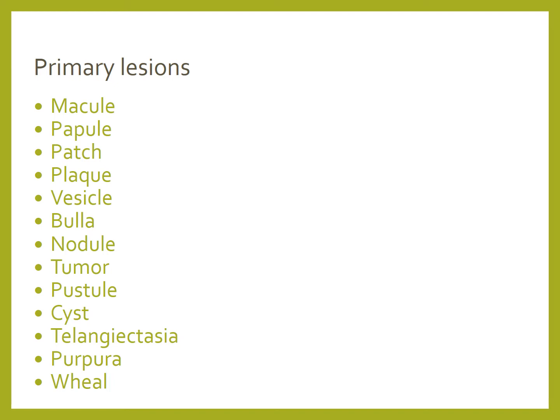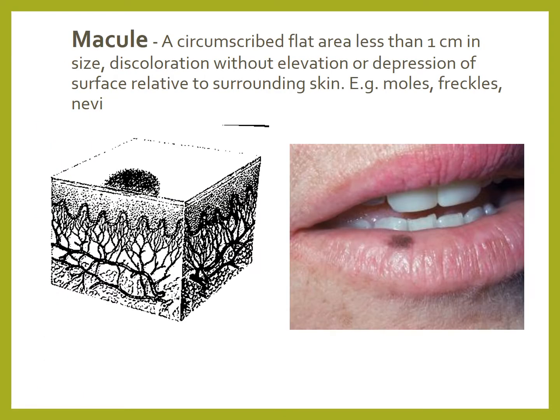Let's look through primary lesions one by one. A macule is a circumscribed flat area less than 1 cm in size — a discoloration without elevation or depression of the surface relative to the surrounding skin. Examples on the skin would be moles, freckles, and nevi. An example in the oral cavity is an oral melanotic macule seen on the labial mucosa.